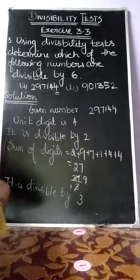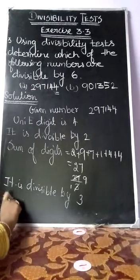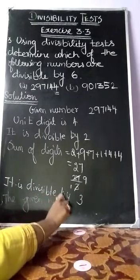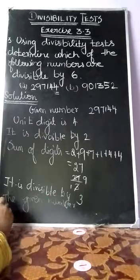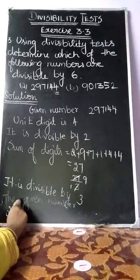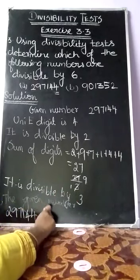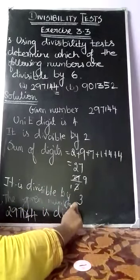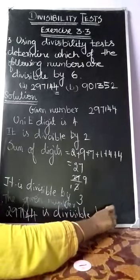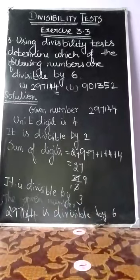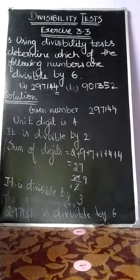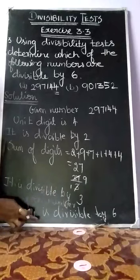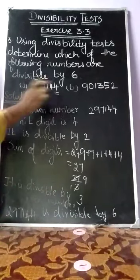Finally, we conclude: the given number 297144 is divisible by 6. To understand how: first check the given value is divisible by 2, then check the given value is divisible by 3. Only then can we say the given number is divisible by 6.